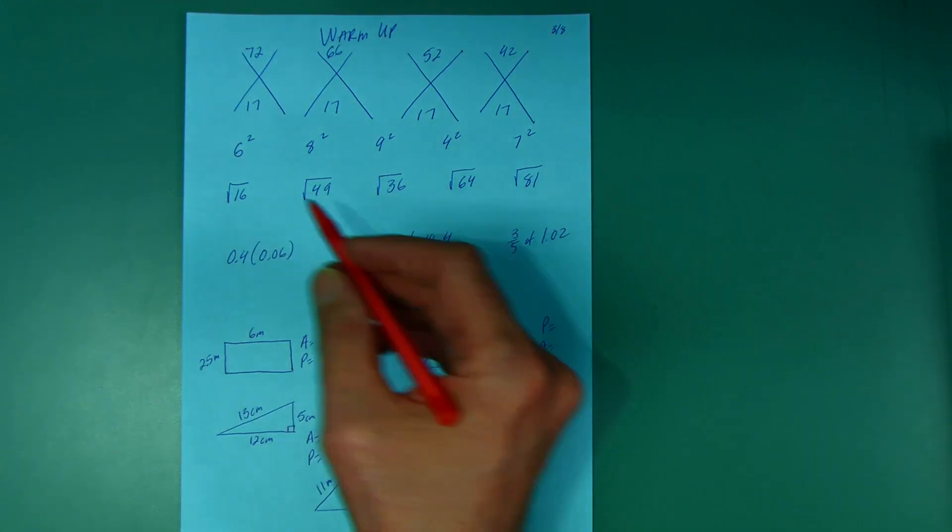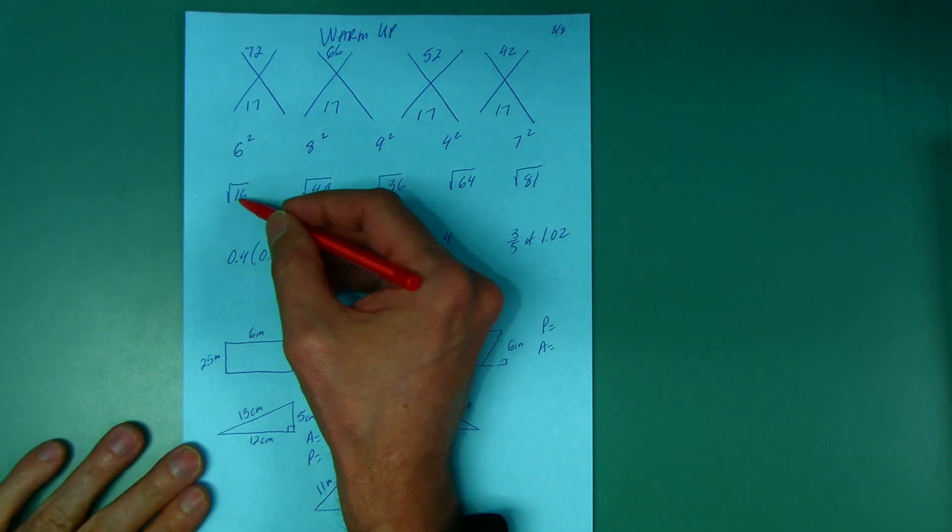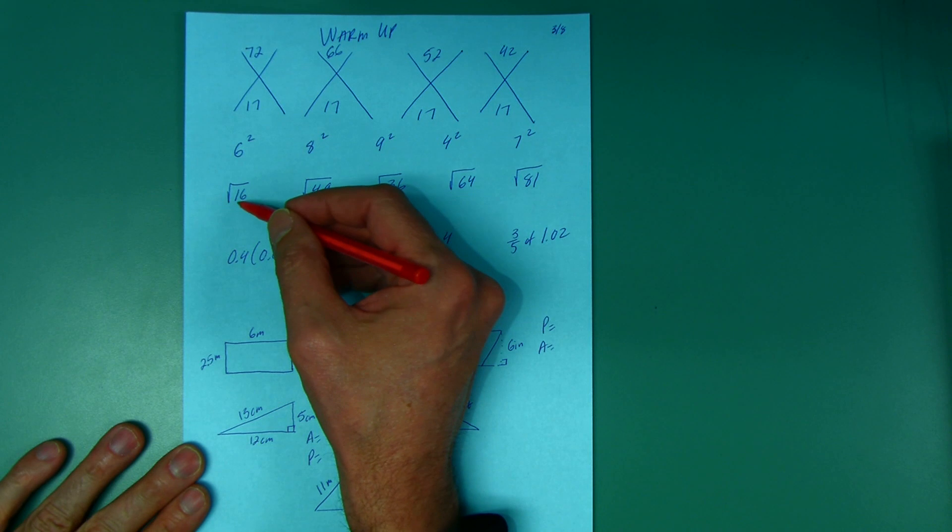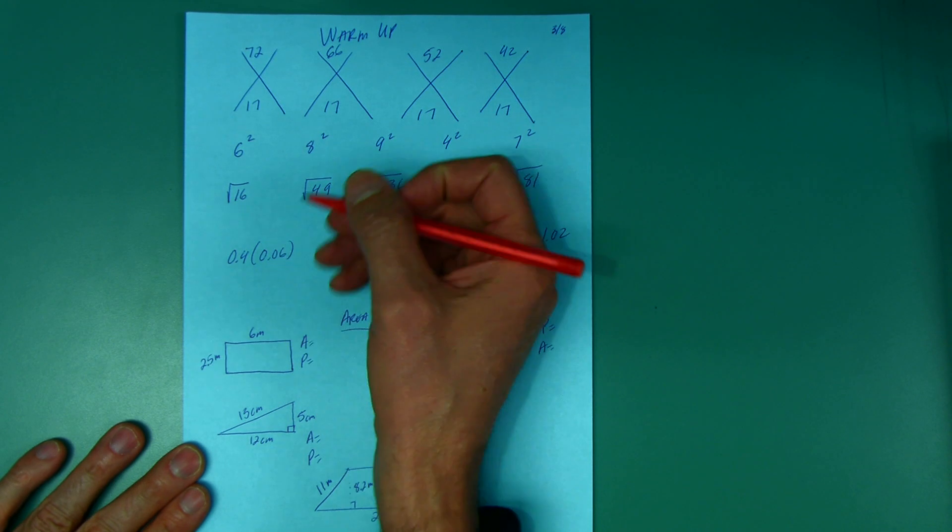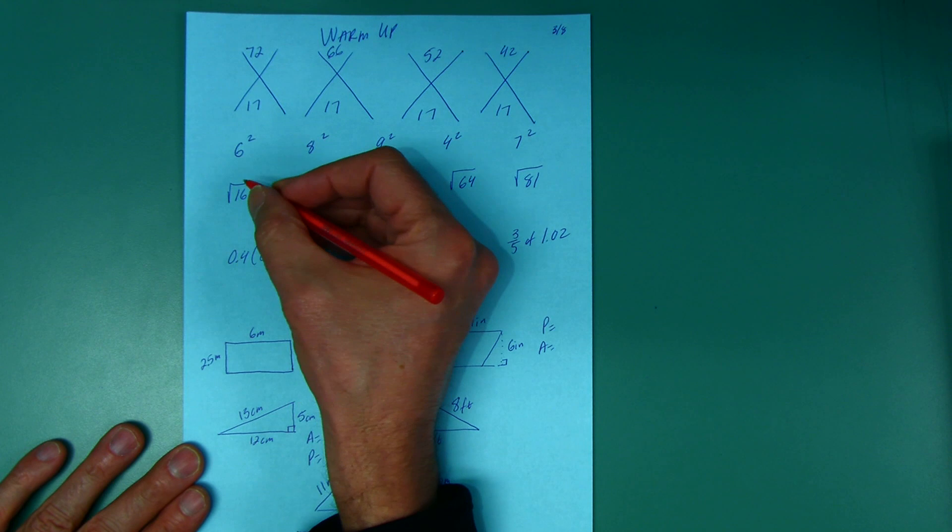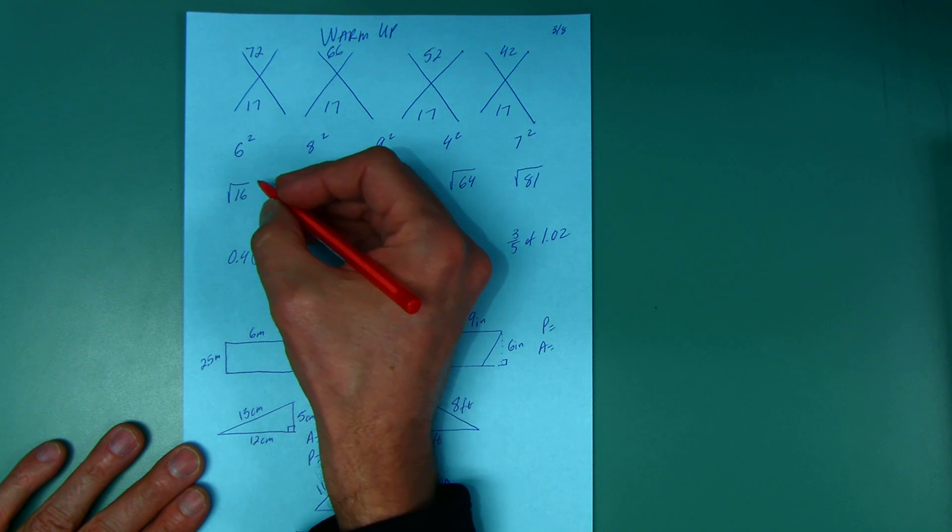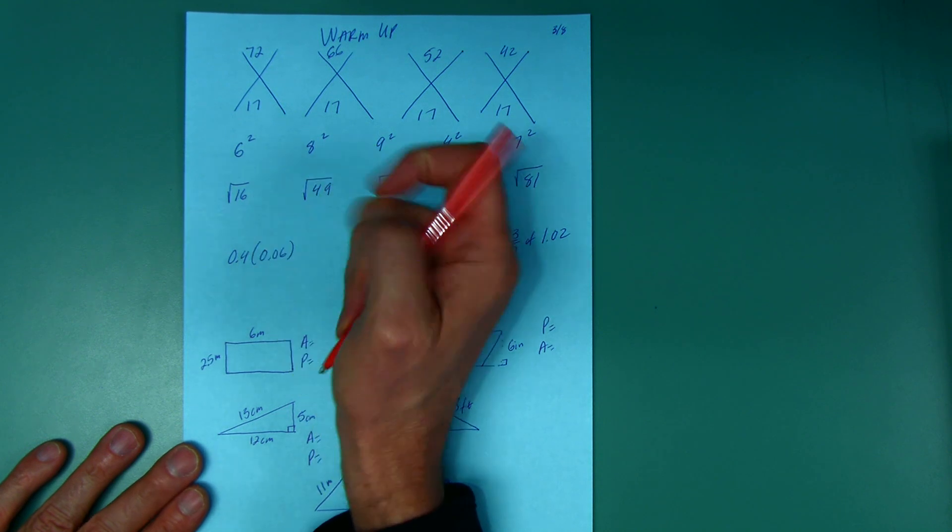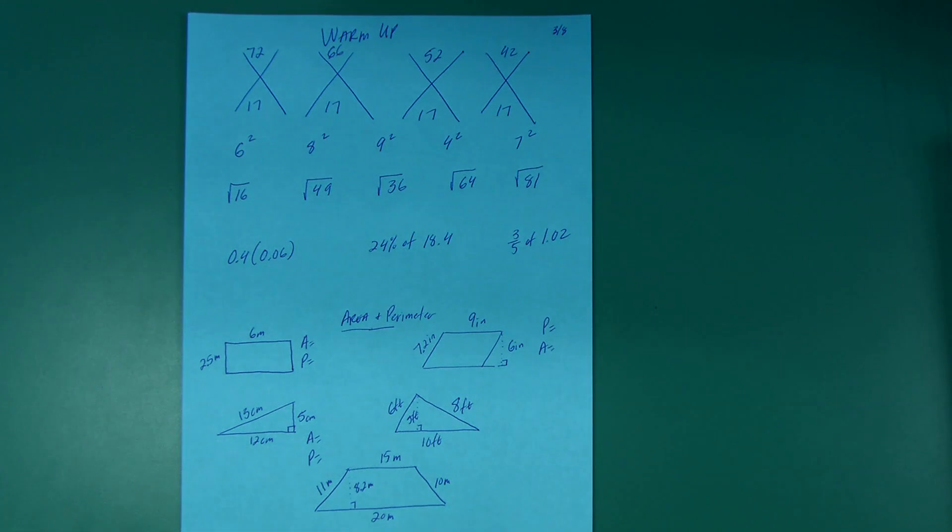Remember these are called square roots. What you do is you say what number times itself equals that. The square root of 16 is what number times itself equals 16. It's not eight - eight times eight is not 16. Don't just cut it in half. Think to yourself what number times itself, what number squared equals 16.